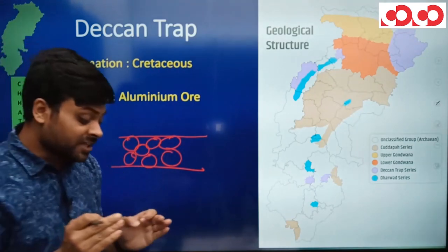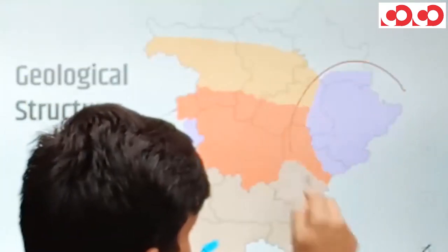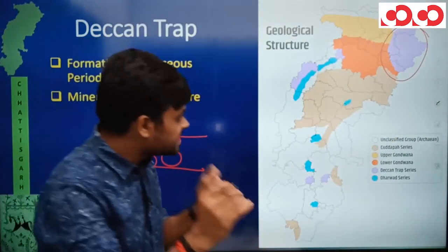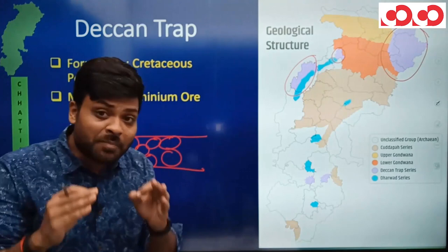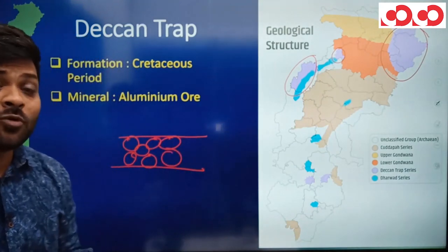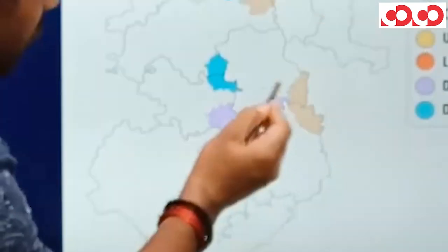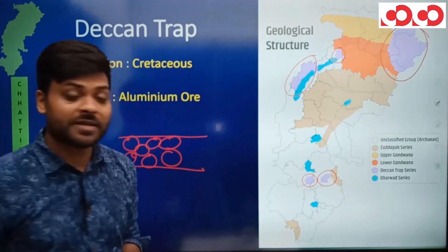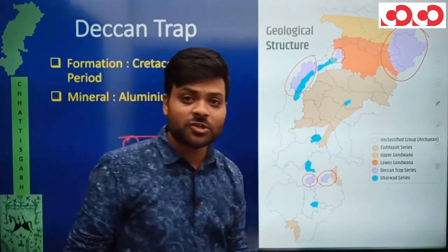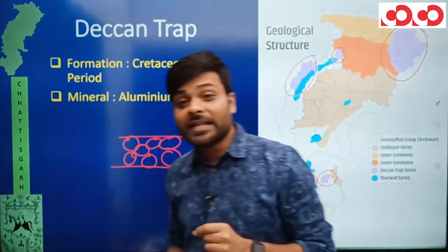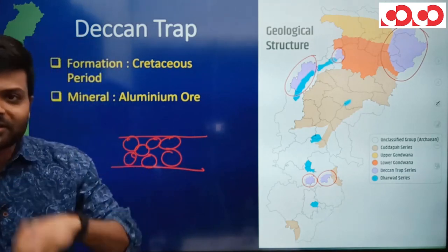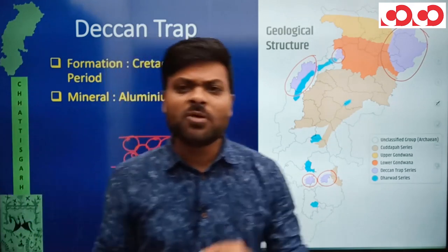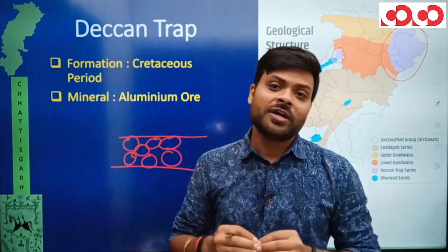Looking at Deccan Trap's extension on the map — its major extension is in 36 Garh's Bastar plateau area. Additionally, small extension is visible in Kabirdham district, Gaurela-Pendra-Marwahi district, and a very small amount in Narayanpur district of the Dandakaranya plateau.